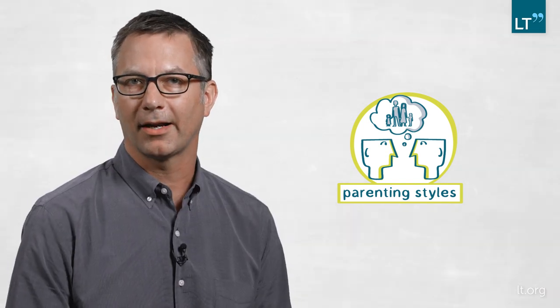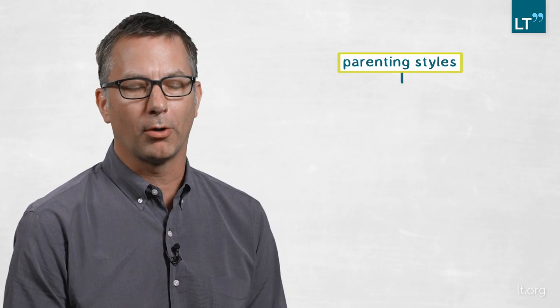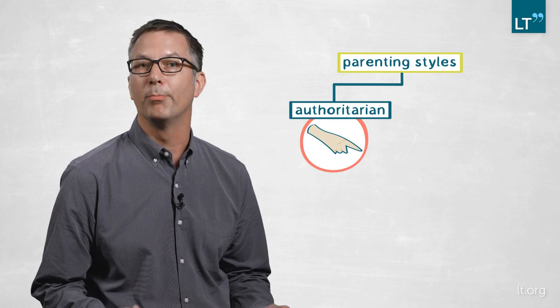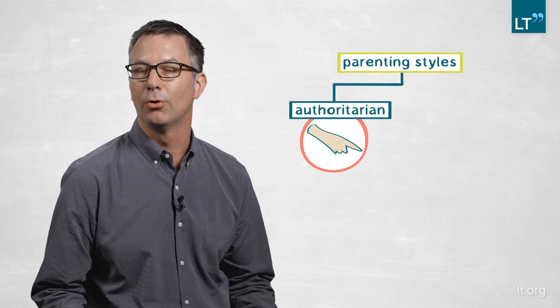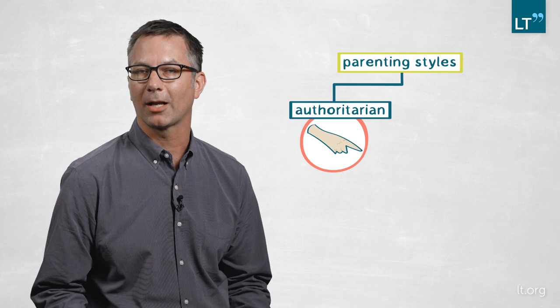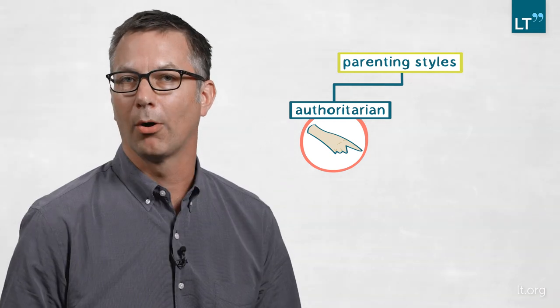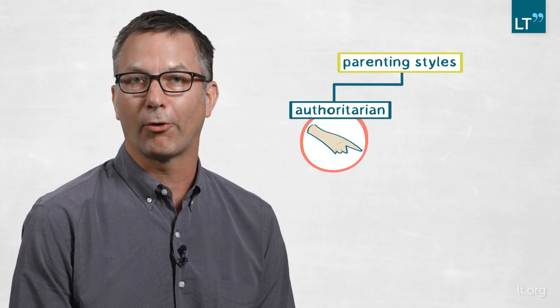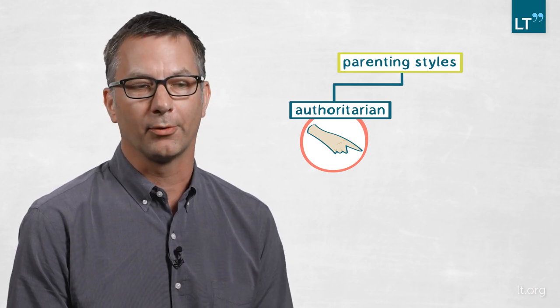The main parenting styles distinguished in the psychology literature are first of all authoritarian parenting, where parents focus on obedience. The parents say that I know what is right for my child and I expect my child to follow my rules. Authoritarian parenting would often involve corporal punishment where parents are very forceful in making their child do the right thing.